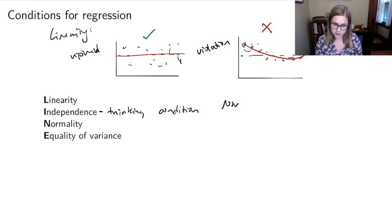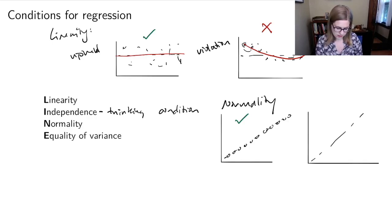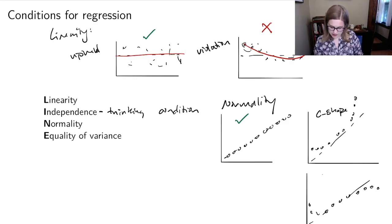For normality, I like to look at the QQ plot. Good would be if we had our data points all somehow lying perfectly along the line. What would look bad is if we had that dotted line and then we had the data in sort of a C shape, pulling away, or if we had the data in an S shape. Anytime that it's pulling away, that's going to be a violation of the condition.